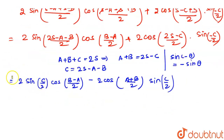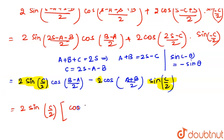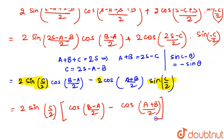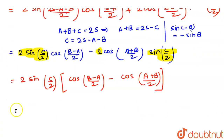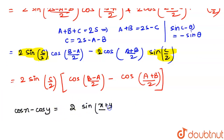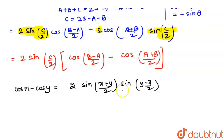We can see that 2 sin(C/2) is common in both terms. Taking it common, we get 2 sin(C/2) times [cos((B minus A)/2) minus cos((A plus B)/2)]. We now apply the identity: cos X minus cos Y equals 2 sin((X plus Y)/2) sin((Y minus X)/2), where X is (B minus A)/2 and Y is (A plus B)/2.